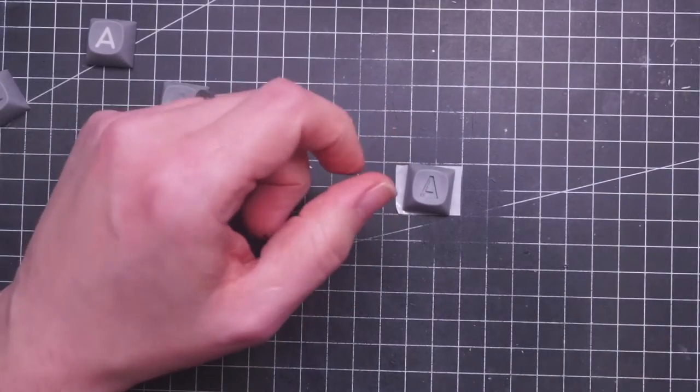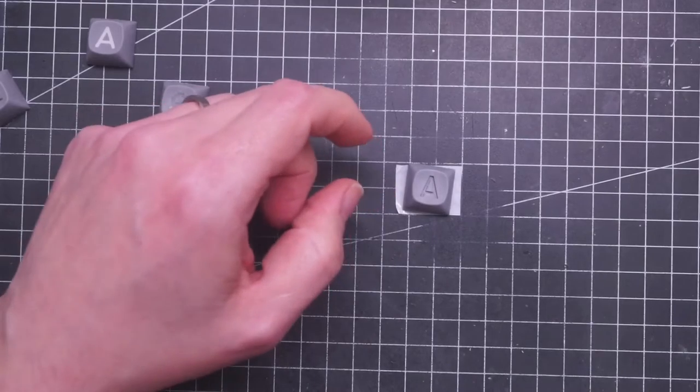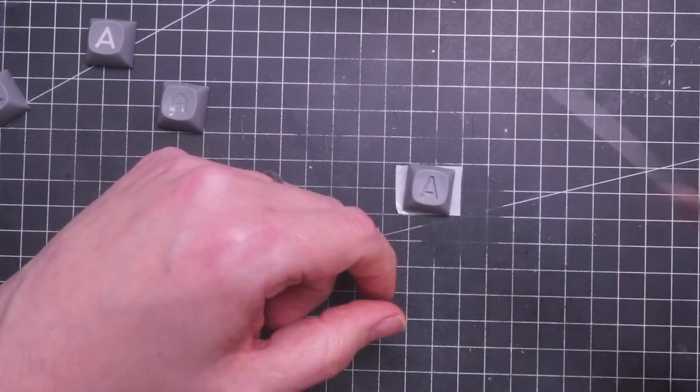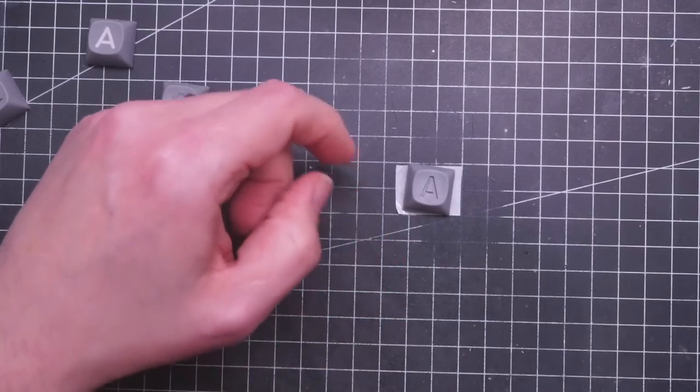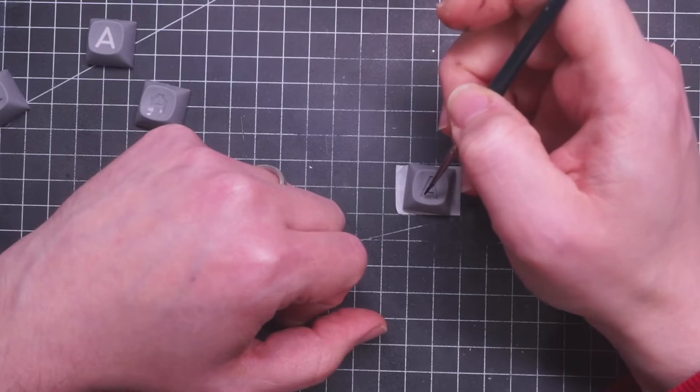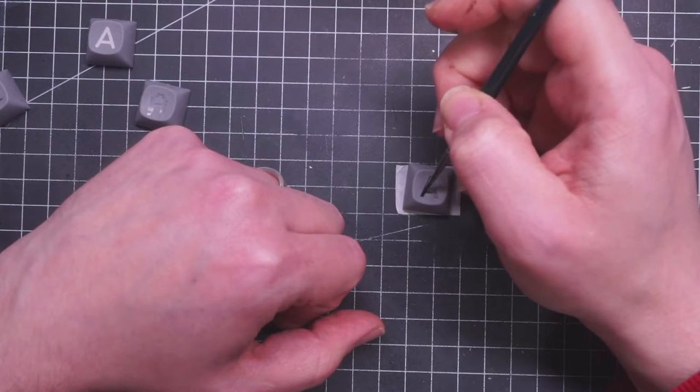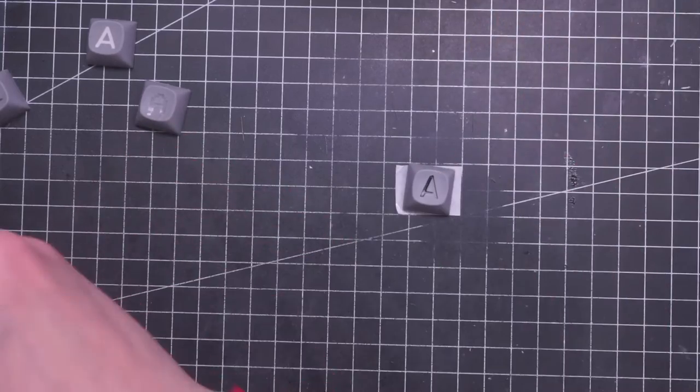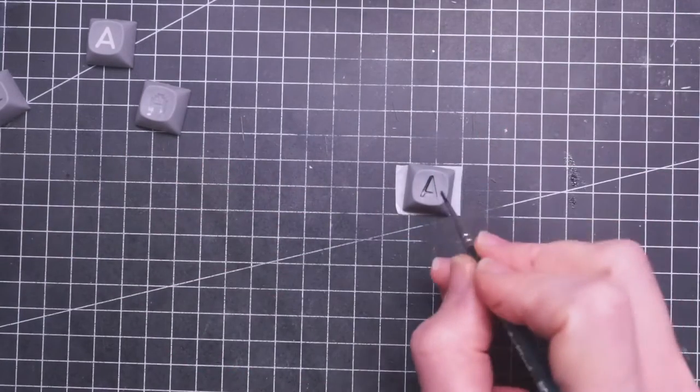Okay since the black resin is slightly transparent, I'm going to try to paint the inside of the legend with black first and see if that helps with the final result.